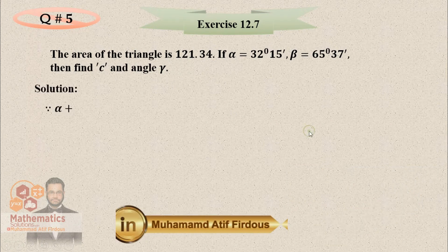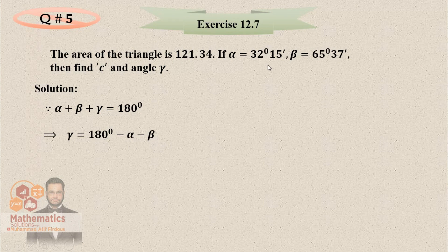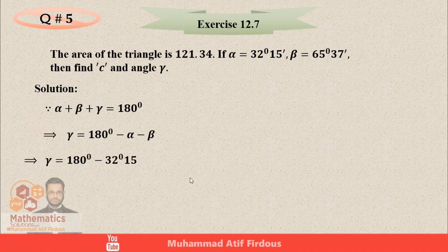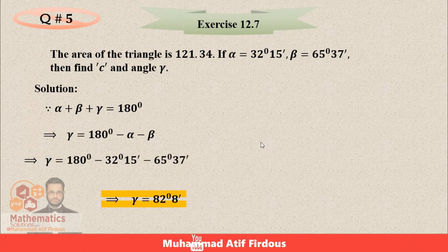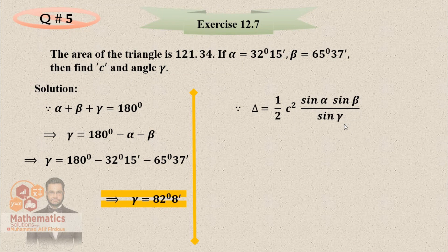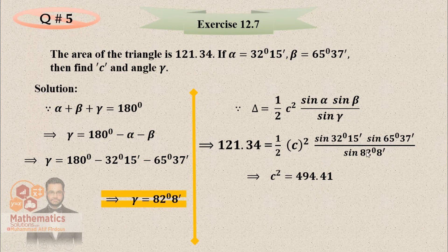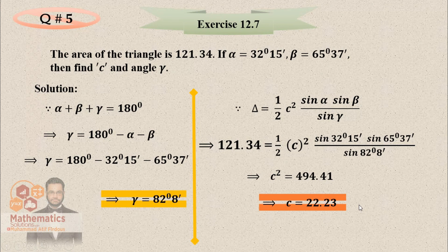First find gamma using the sum of angles of a triangle equal to 180 degrees: gamma = 180 − alpha − beta. After substituting the given values of alpha and beta, gamma = 82 degrees 8 minutes. For the area formula with side C: delta = (1/2) C-squared × sin(gamma). Given delta = 121.34, solve for C-squared = 494.41, then take the square root. C = 22.23, which is your required answer.